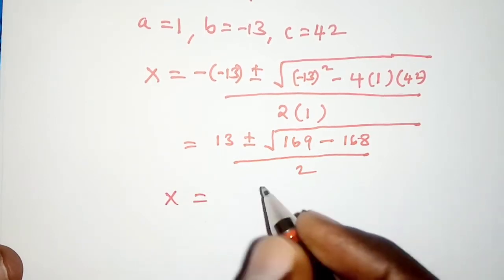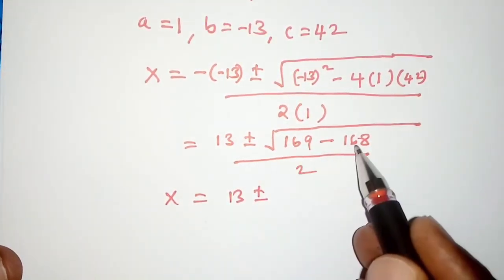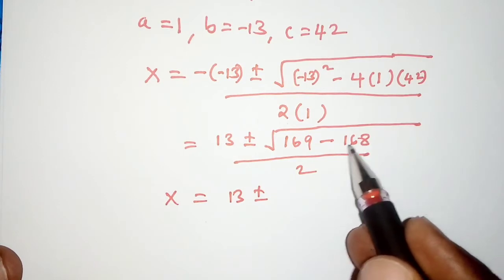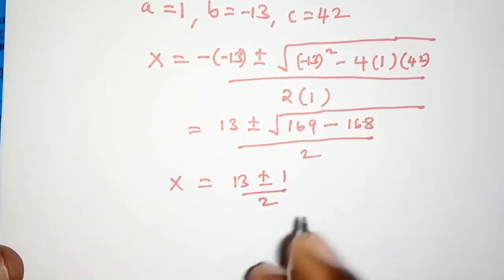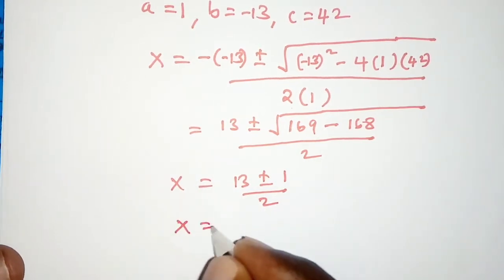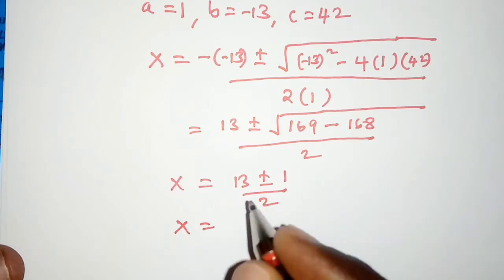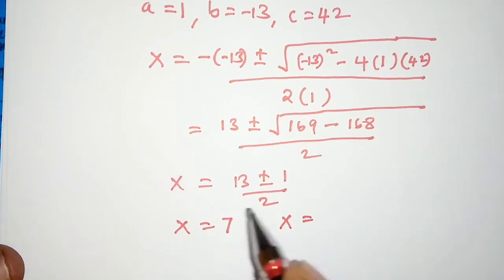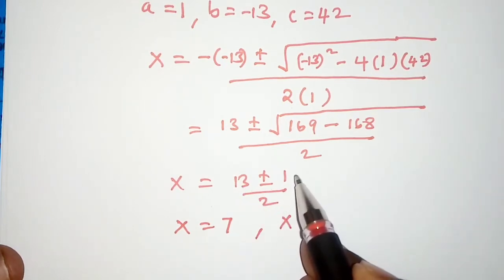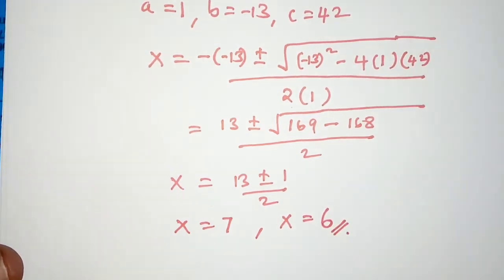So the value of x should be 13 plus or minus, 169 minus 168 that is 1, square root of 1 is 1 over 2. And then the first value of x becomes 13 plus 1, that is 14 divided by 2 which is 7. Then 13 minus 1 is 12 divided by 2 that is 6. Just as simple as that.